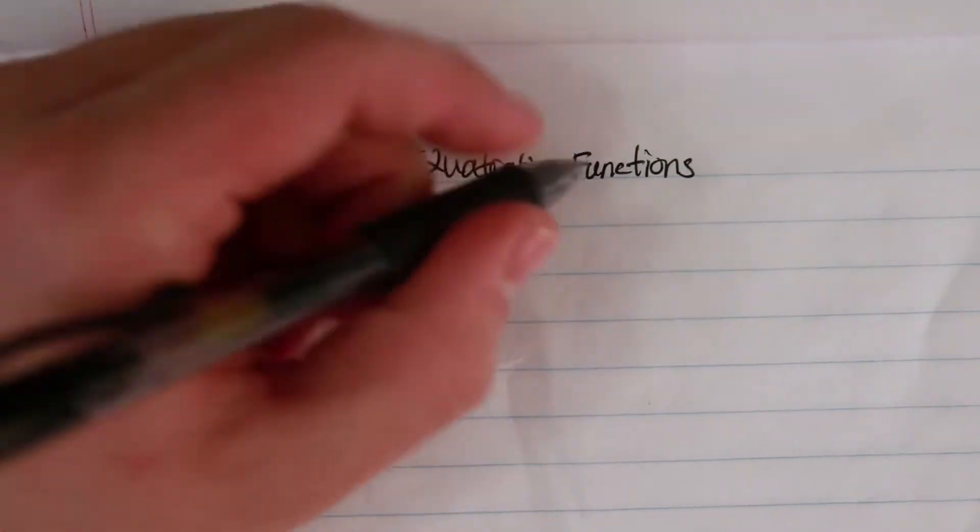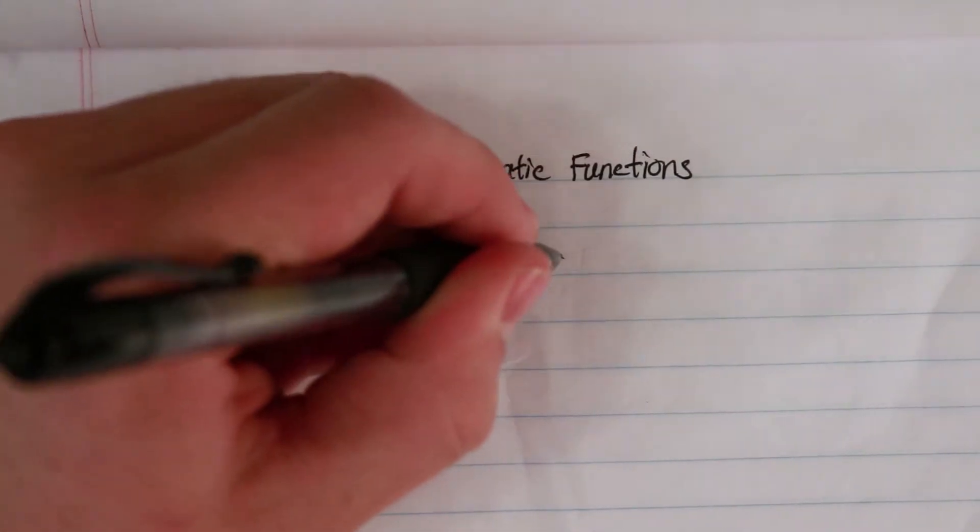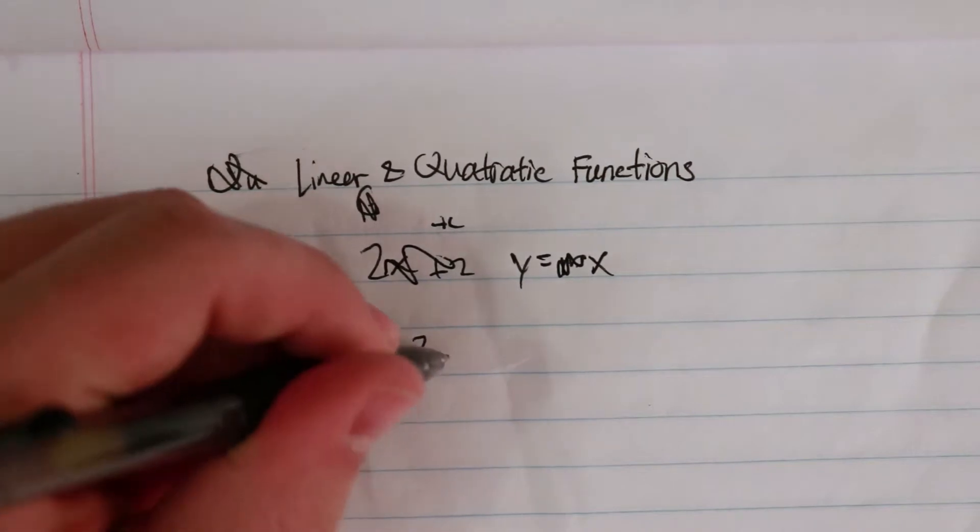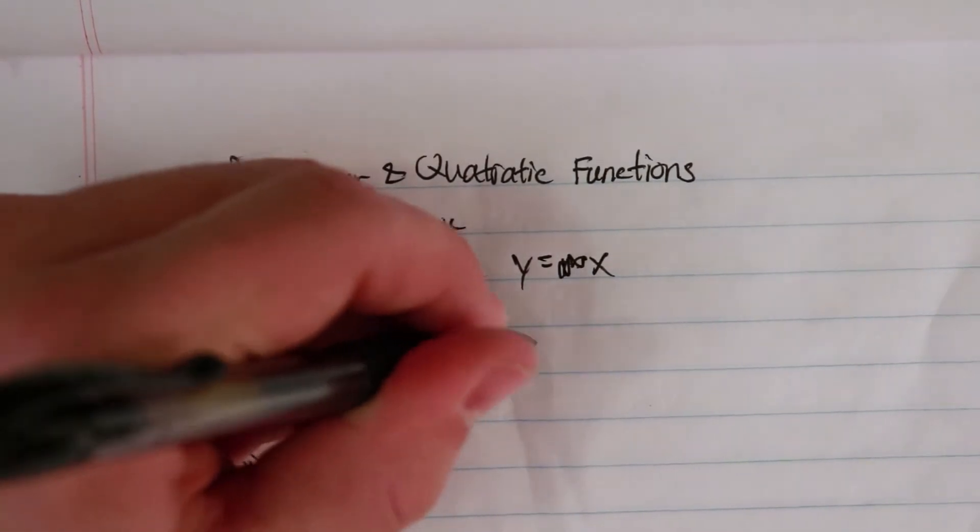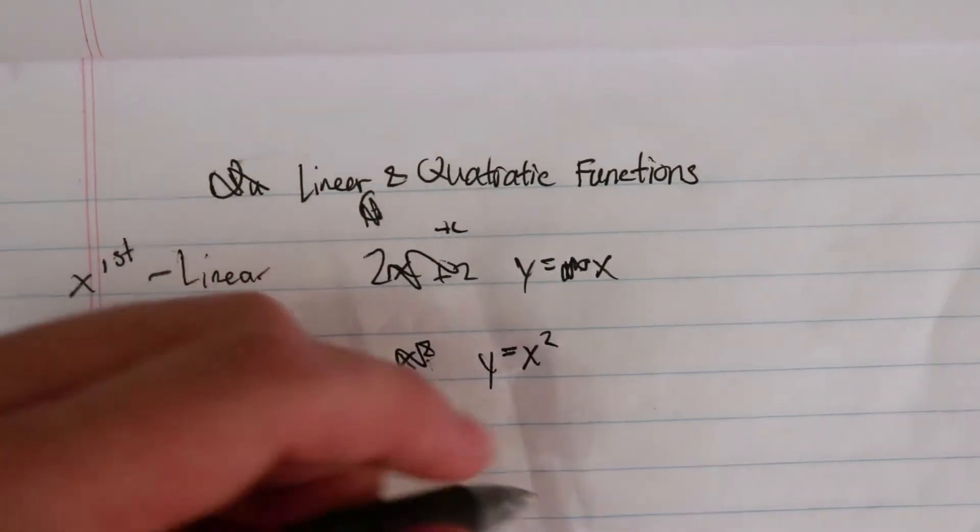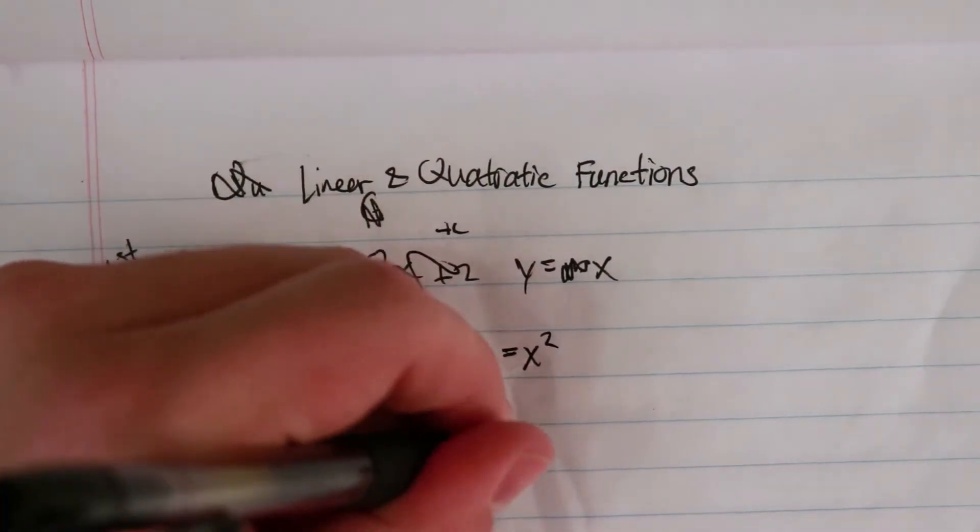The mother function - let's just look at the mother function. So the mother function is y equals x. Here it's y equals x squared. And then for a cubic function, it's y equals x cubed.